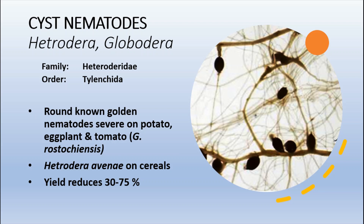The golden cyst nematode is known as Globodera rostochiensis. There are also other important nematodes: Heterodera avenae, also called the cereal cyst nematode, which attacks cereals; Heterodera schachtii, the sugar beet cyst nematode; and Heterodera glycines, the soybean cyst nematode.